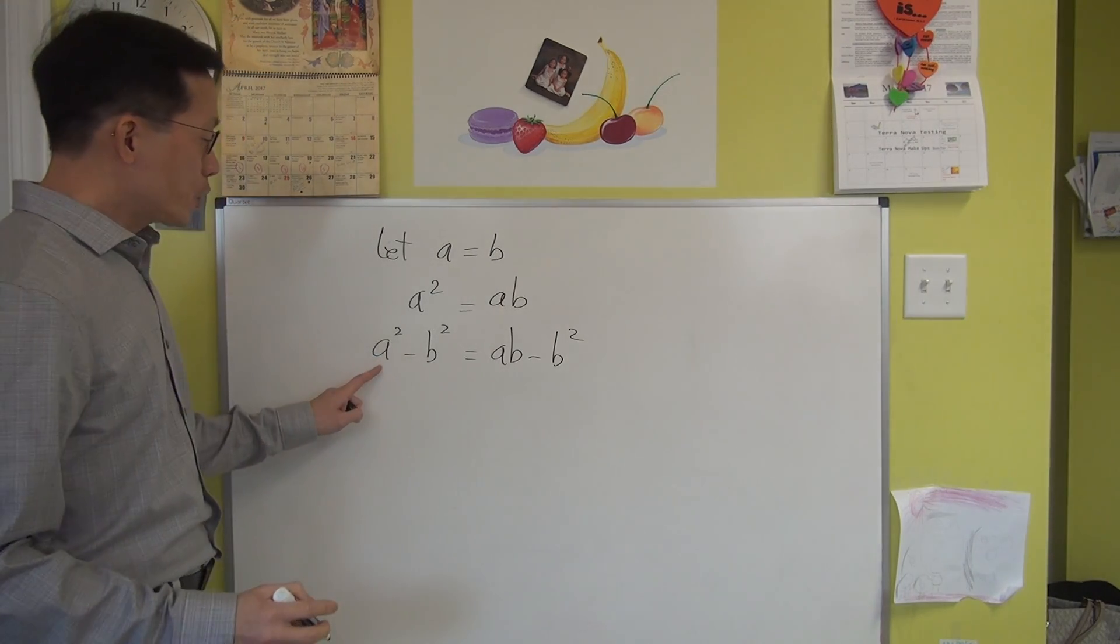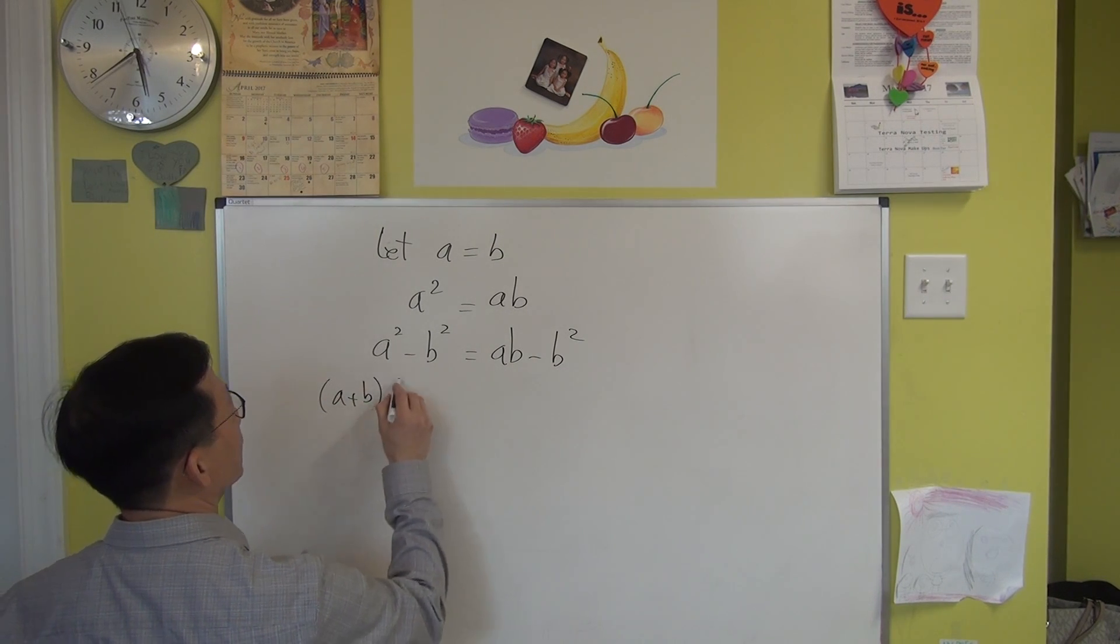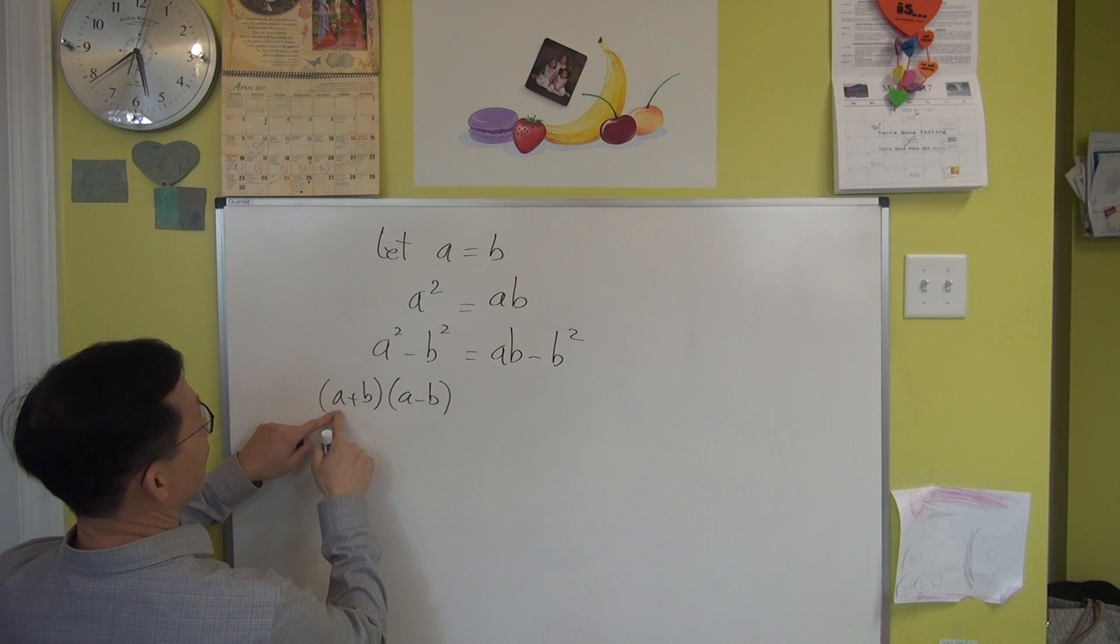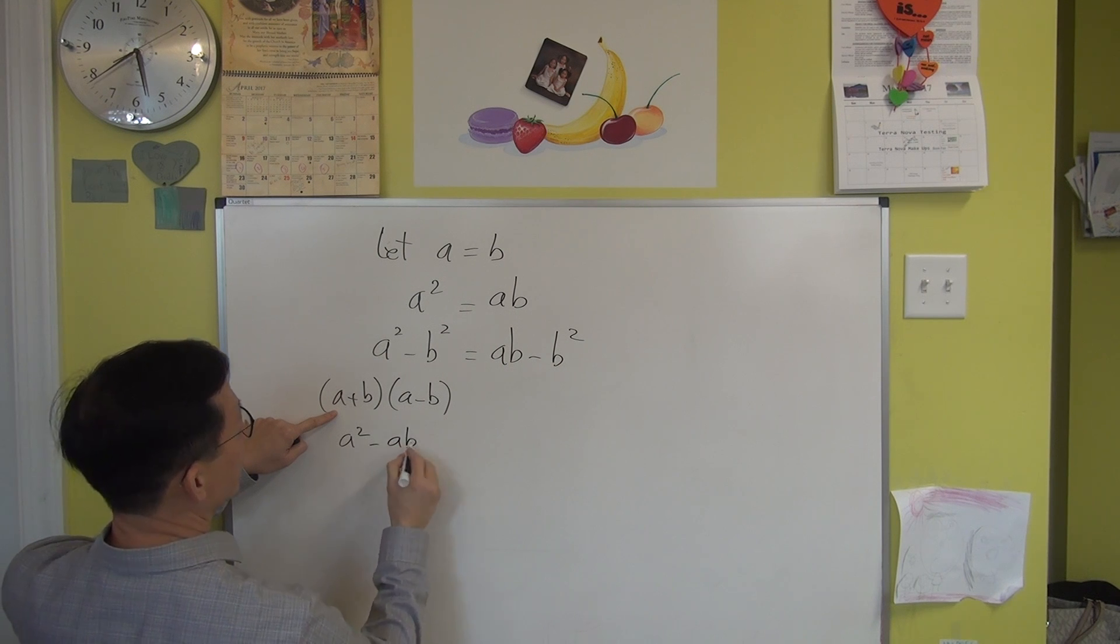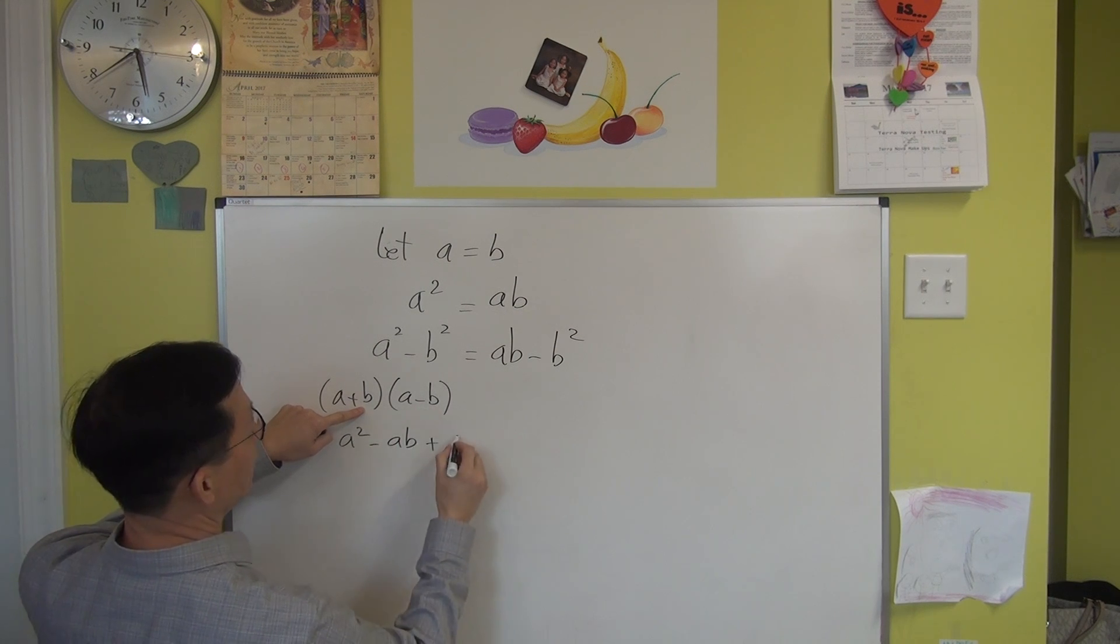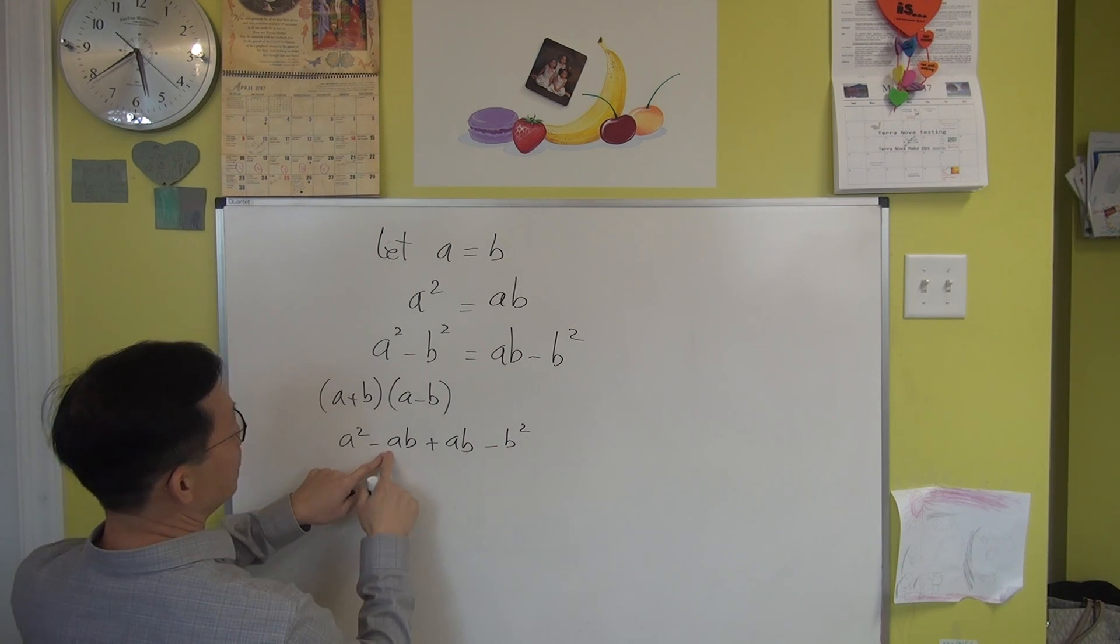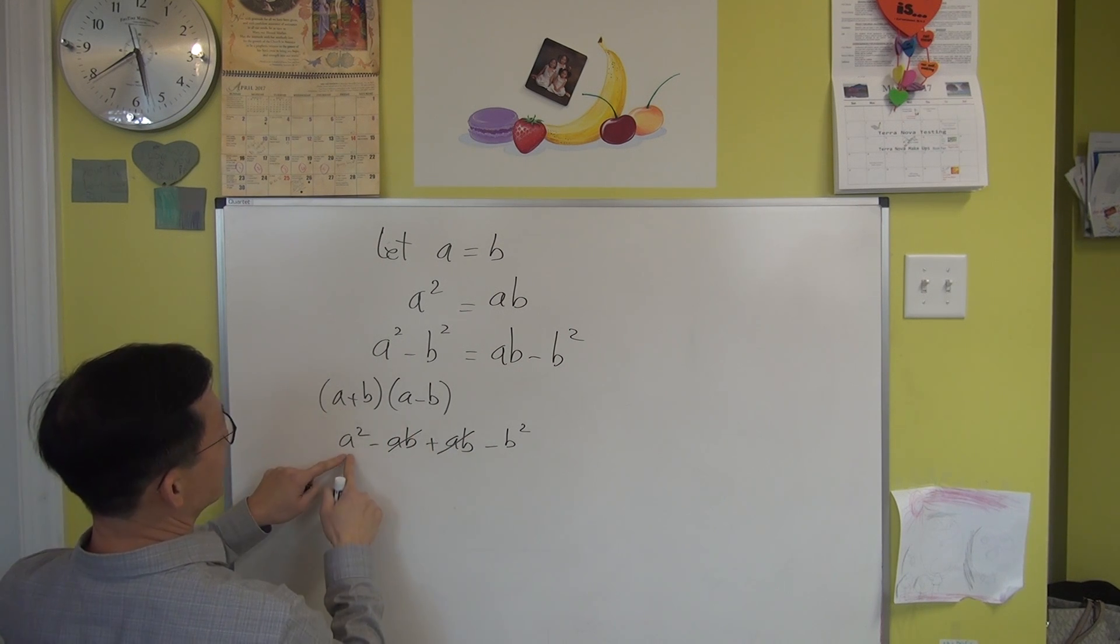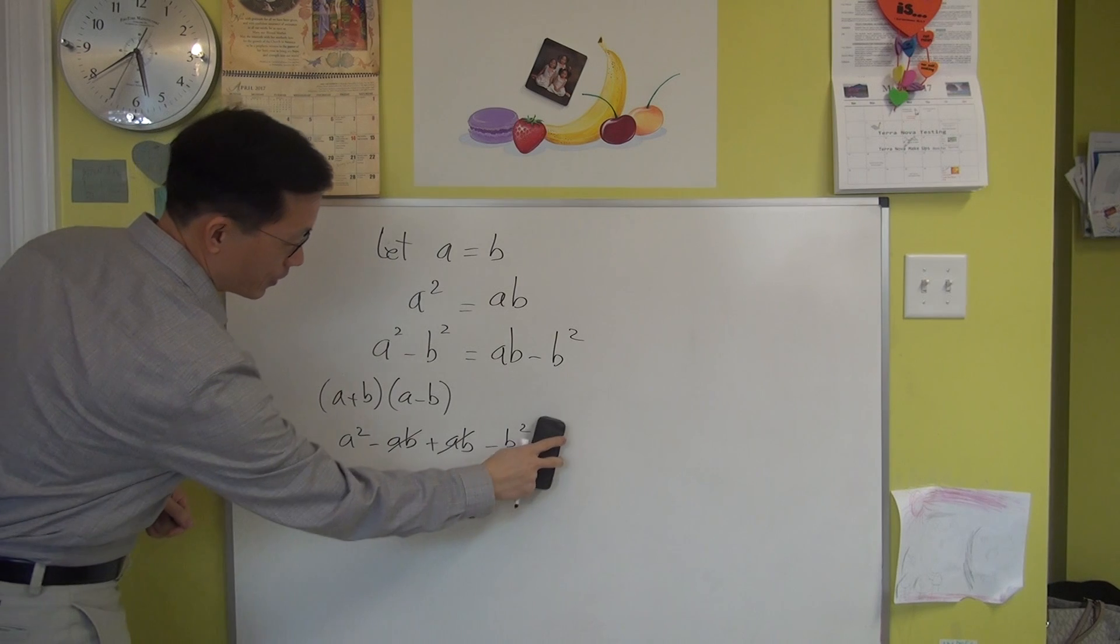Now next, you know A squared minus B squared. That is A plus B times A minus B, right? Let's do a quick check. A times A gives you A squared. A times minus B gives you minus AB. Now B times A is plus AB or BA, it's the same thing. And B times minus B, that's minus B squared. So minus AB plus AB equal to 0. So this is equal to A squared minus B squared. So that's a quick check.